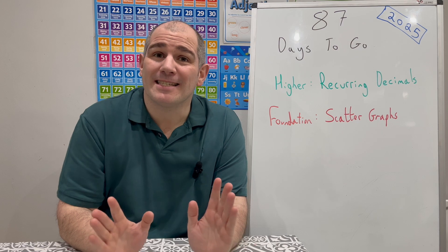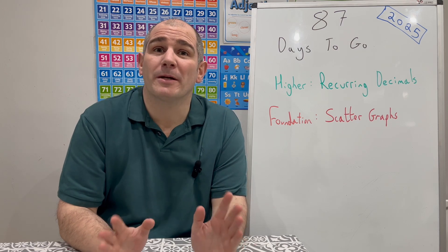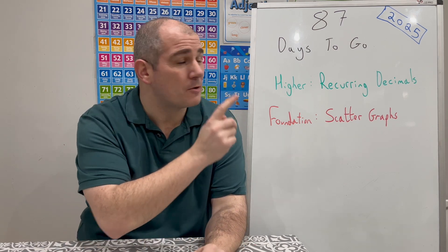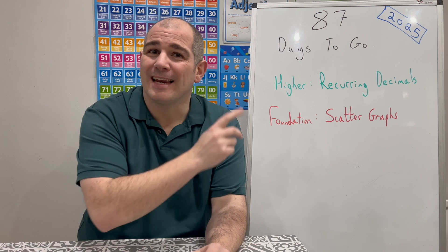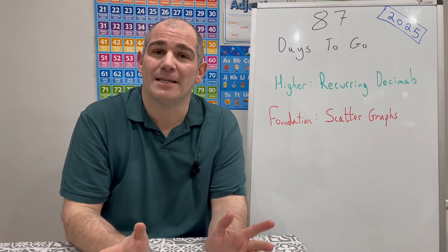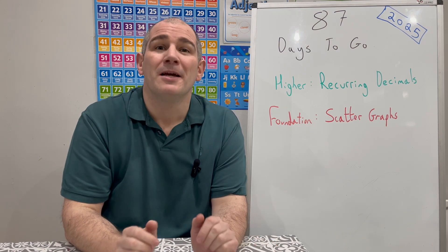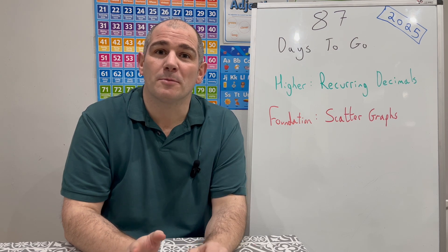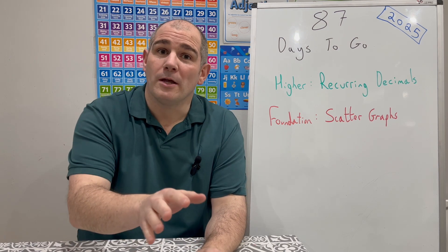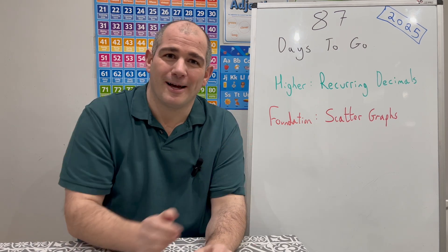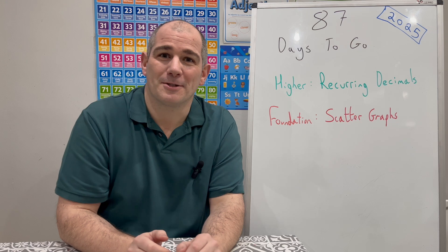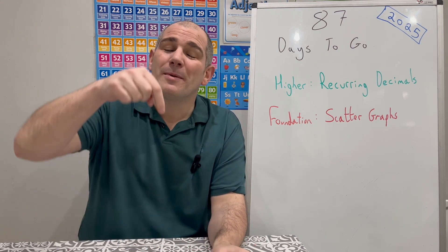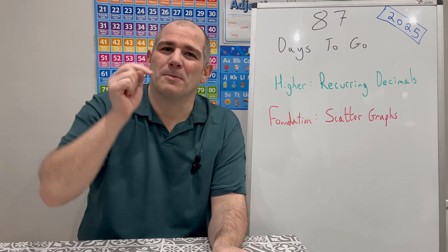If you're preparing for GCSE Higher, your topic today is Recurring Decimals. There's a link to that video in the top right-hand corner, and if you click that link, it brings you straight to your revision session with 87 days to go. Don't worry, the revision session is not going to go on forever, like Recurring Decimals do, but I hope you find that revision session useful. Also remember, there's a link to it in the description below.